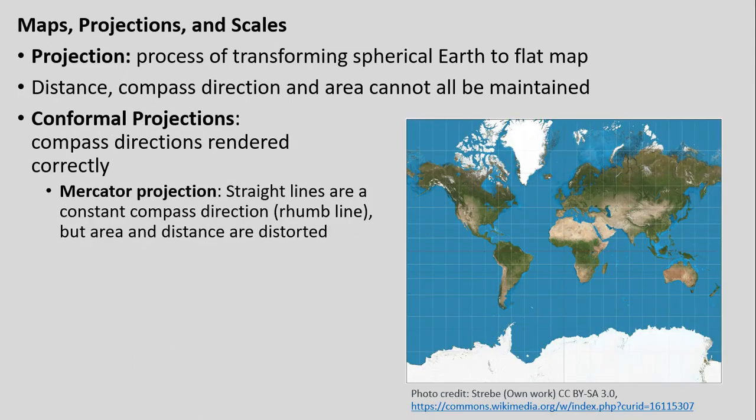For conformal projections, this is where the Mercator projection comes in — a very famous one. It renders compass directions correctly and was initially created for sea navigation so that sailors could travel along a constant direction. However, it does not maintain distance and area, and becomes very distorted towards the poles. For example, on a Mercator map, Africa appears as big as Greenland, but Africa is actually much, much larger.